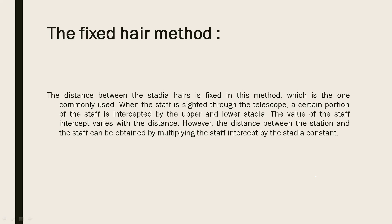The next one is the fixed hair method. The distance between the stadia hairs is fixed. Looking at a staff through the telescope, you can see a certain portion of the staff between the upper and lower stadia hairs. The staff intercept is then multiplied to determine the distance.